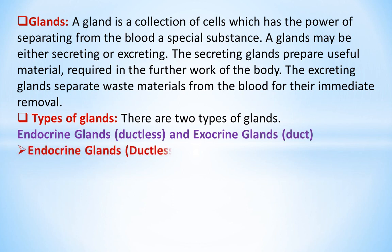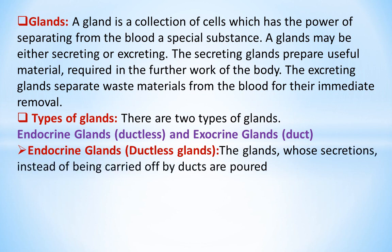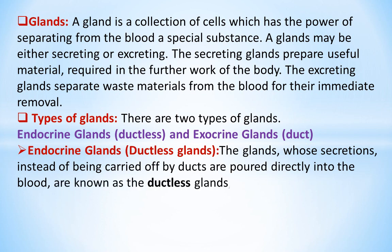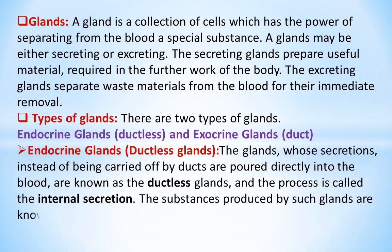Endocrine glands, or ductless glands, are glands whose secretions, instead of being carried off by ducts, are poured directly into the blood. They are known as the ductless glands, and the process is called internal secretion. The substances produced by such glands are known as hormones.